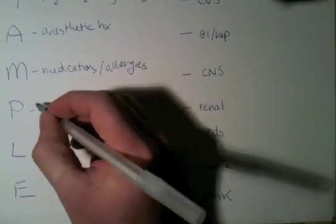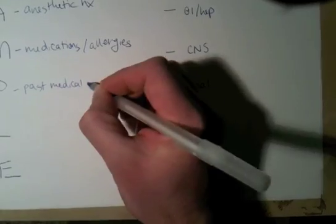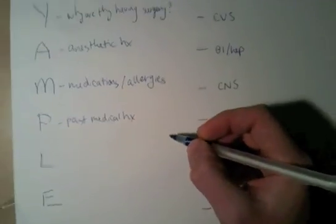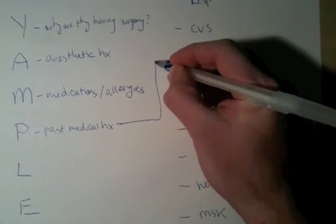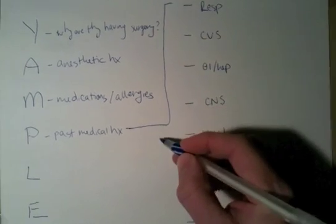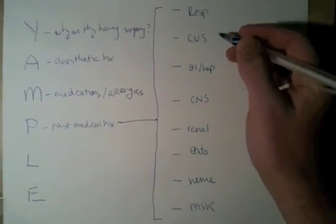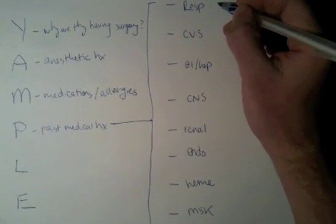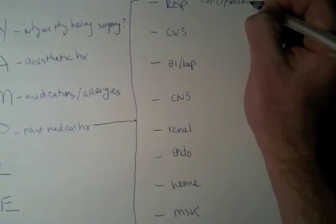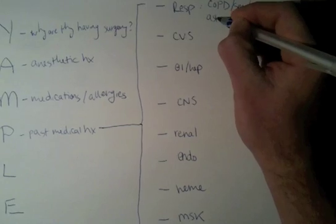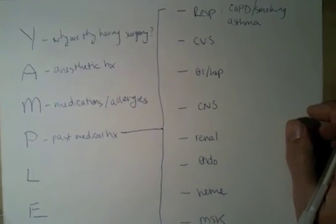The next 'P' is past medical history, and it's important to break it down by system. I usually like to start with the respiratory system — you want to make sure you know about a history of COPD or smoking, or a history of asthma. A way to get at that is to ask if they ever have to use puffers to help them breathe.